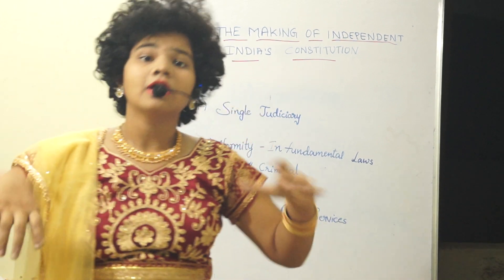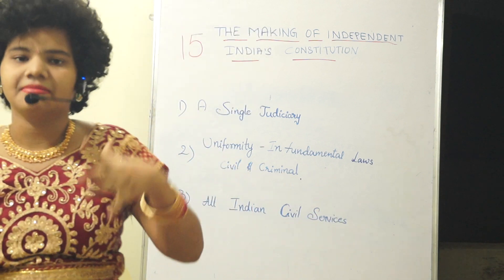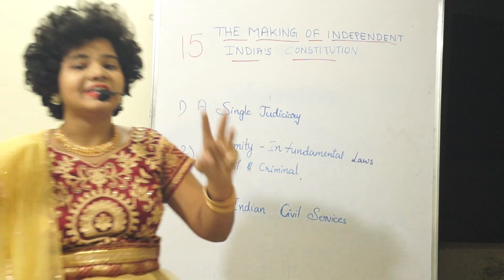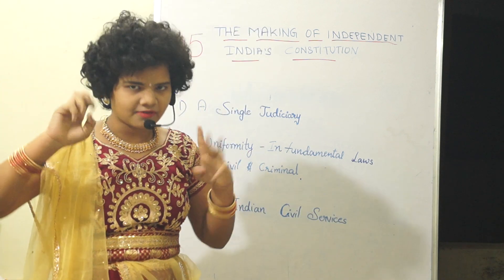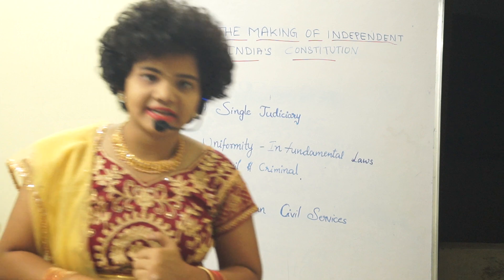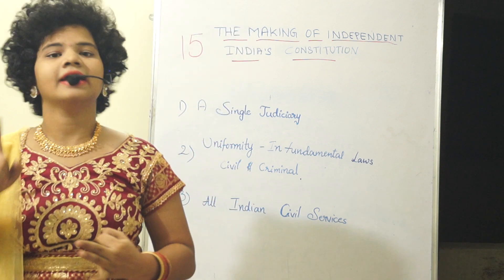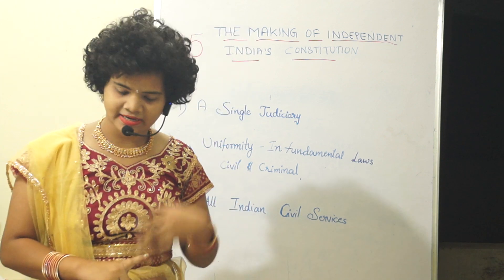We also have a concurrent list. There are 3 types of lists: Central list, State list, and Concurrent list.